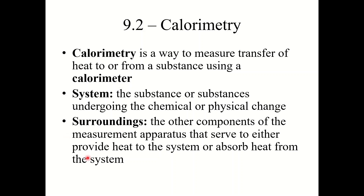We're going to define two terms here. System refers to the substance or substances that are undergoing the chemical reaction or physical change. The surroundings are simply the other components of the measurement apparatus that serve to either provide heat to the system in the case of an endothermic reaction, or absorb heat from the system in the case of an exothermic reaction.